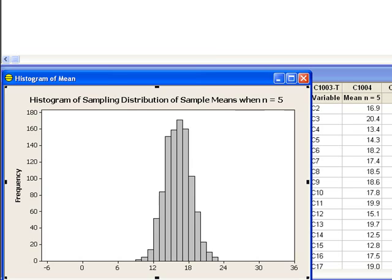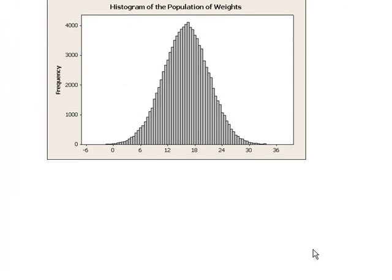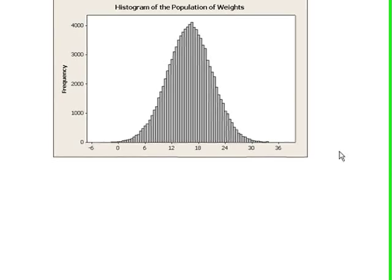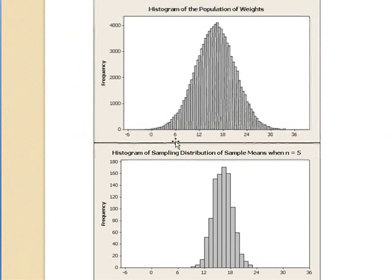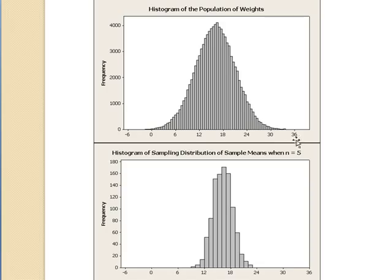Let's compare the population histogram to the histogram of the sample means. To correctly compare these graphs, I set the x-axis of each histogram to be the same. Think about why I did this.